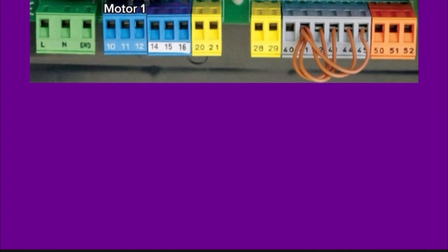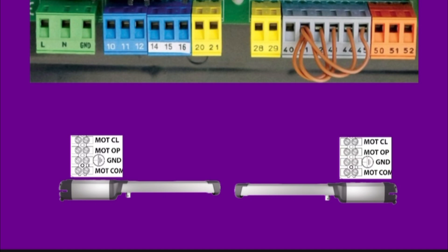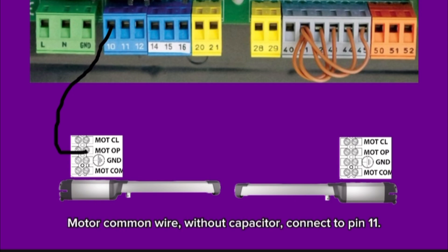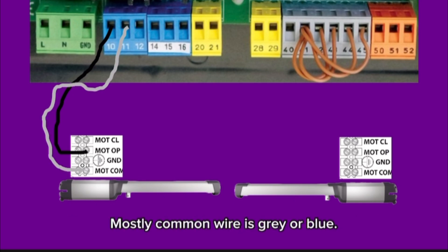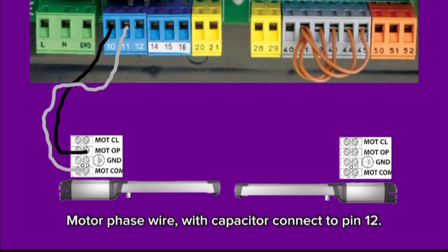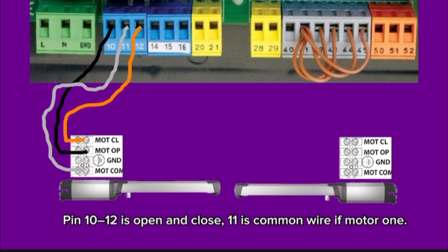Connection of motor 1. Motor phase wire with capacitor connects to pin 10. Motor common wire without capacitor connects to pin 11. Mostly common wire is gray or blue. Motor phase wire with capacitor connects to pin 12. Pin 10 and pin 12 are open and close wires, and pin 11 is common wire of motor 1.